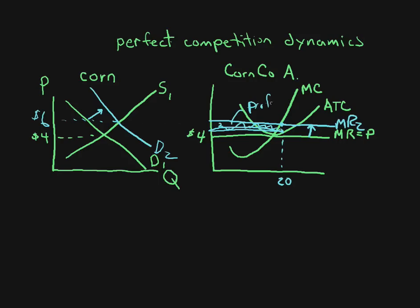Now, when you get profits, the idea is simple enough. When there are profits that attracts new firms into this particular market. And the supply curve shifts to the right like this.